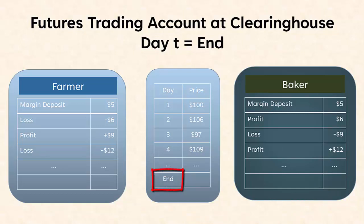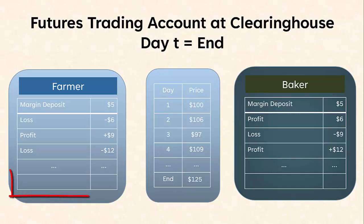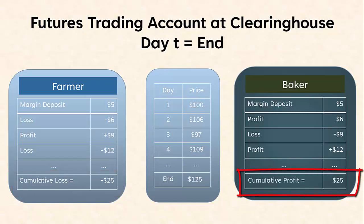Eventually, we get to the last day in the life of the futures contract and the final futures price is $125. If we were to add up the sum of the daily profits and losses, it's going to come to the fact that the farmer will have paid away $25 to the baker. In other words, the farmer's cumulative loss is $25 and the baker's cumulative profit is +$25.